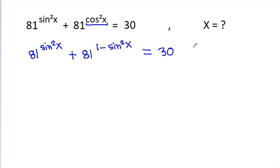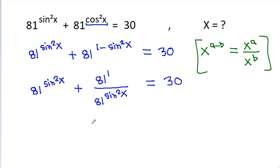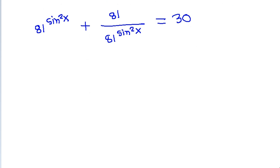It is equal to 30. Using the rule x power (a minus b) equals x power a divided by x power b, it becomes 81 power sin squared x plus 81 power 1 divided by 81 power sin squared x, which is equal to 30. Now if we take 81 power sin squared x equal to t,